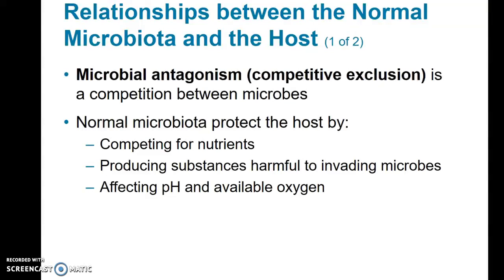There are different types of relationships between the normal microbiota and the host organism. There is a type of relationship called microbial antagonism or competitive exclusion, where the normal microbiota help protect the host from potentially pathogenic microbes by outcompeting them for nutrients and space. They also produce substances harmful to invading microorganisms and can affect the pH and availability of oxygen, which affects what microorganisms can successfully grow in a particular area.